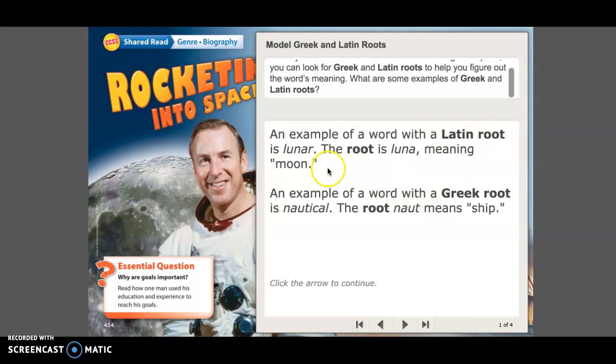Well, let's take a look at a few examples. An example of the word with a Latin root is lunar. The root is luna, meaning moon. Okay. So do you see that? Luna. In this word lunar, which means it's Spanish for moon. Next example. An example of a word with a Greek root is nautical. The root is naut, meaning ship.